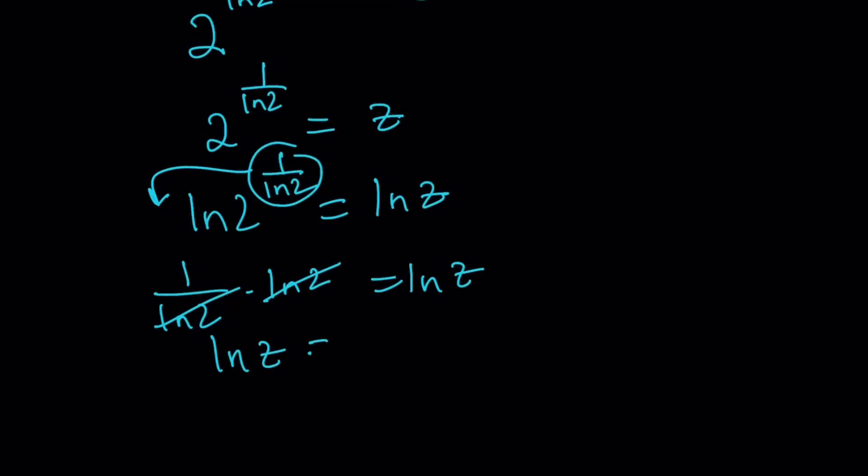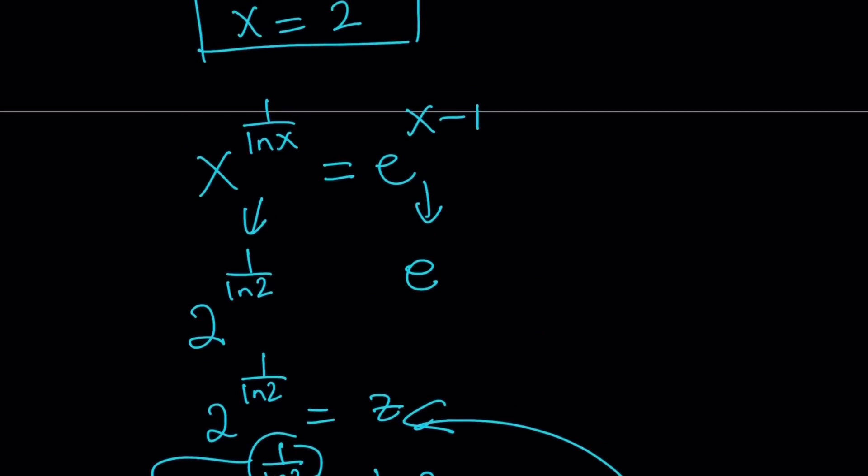Which means z is equal to e, which means this is equal to e, and we also got e from the right-hand side. This is e, this is e, so we are good.